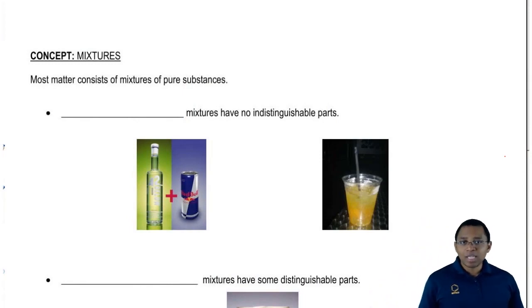Last time we met, we said that chemistry is the study of matter. Matter is anything that has mass and takes up space. Basically, matter is everything around us: tables, the books we're reading, TV, our cars, even ourselves. Everything is matter.